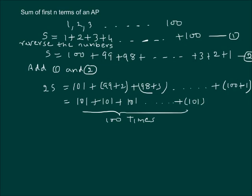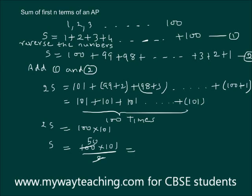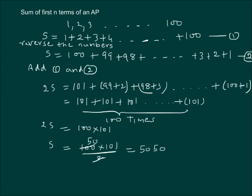So we can write 2S equal to 100 into 101, or S equals 100 into 101 divided by 2, which gives us 5050 as the required answer — that is, the sum of the first hundred natural numbers is 5050.